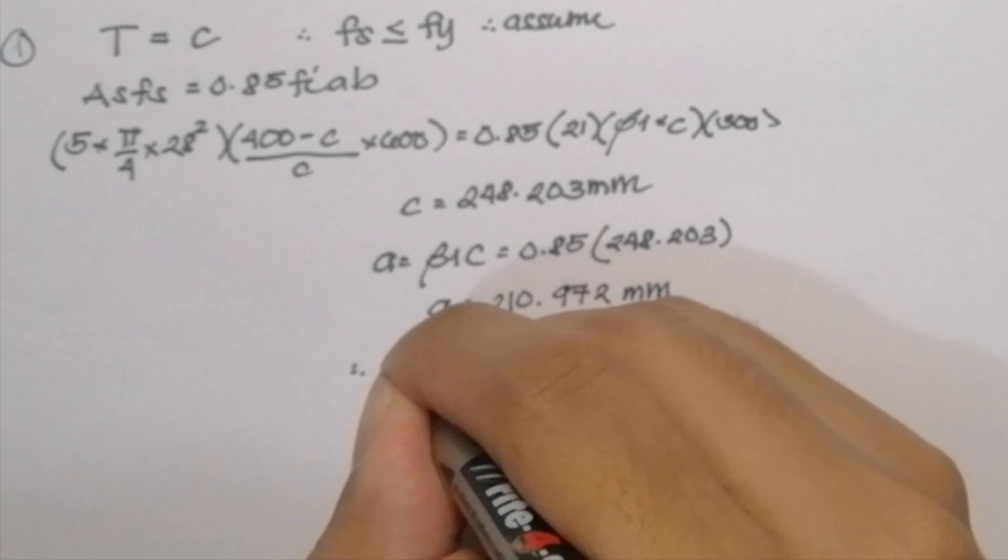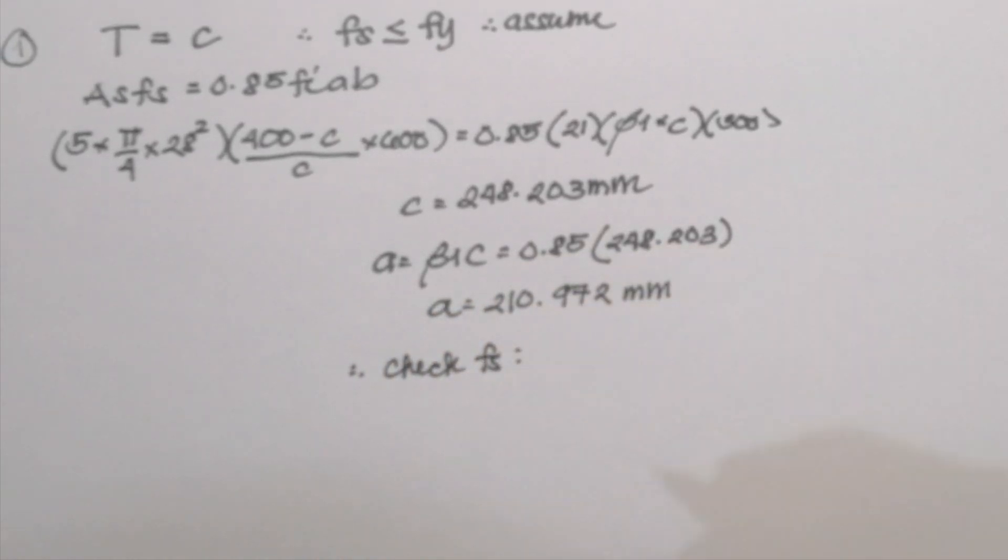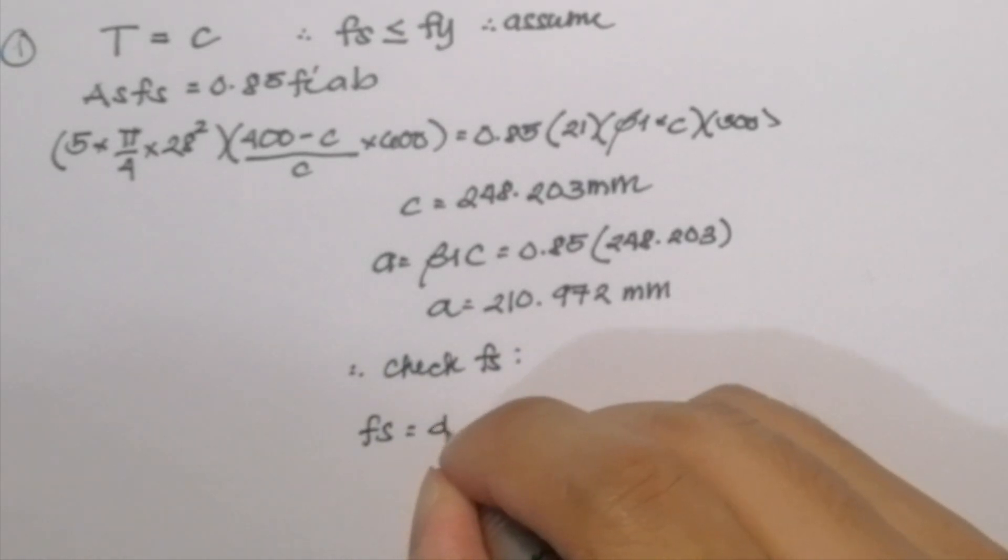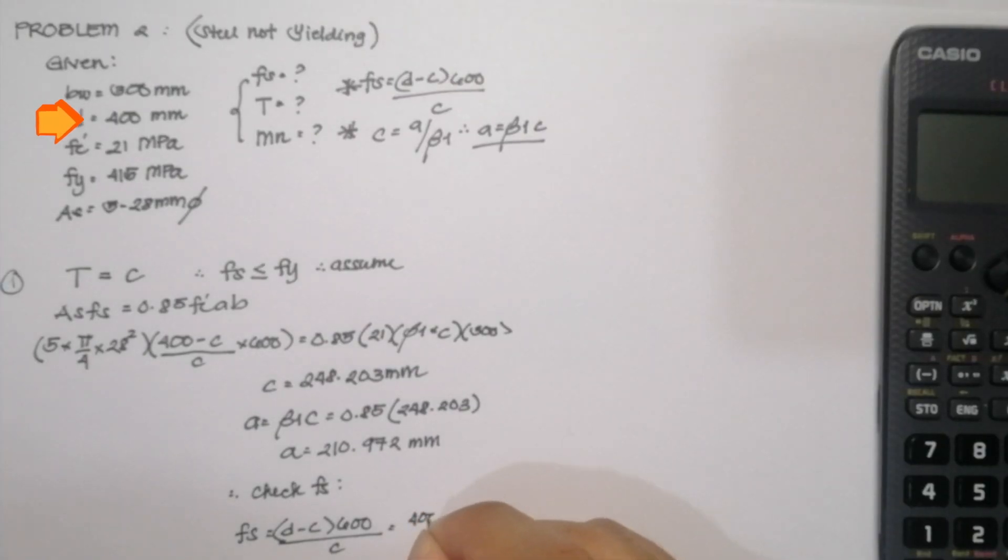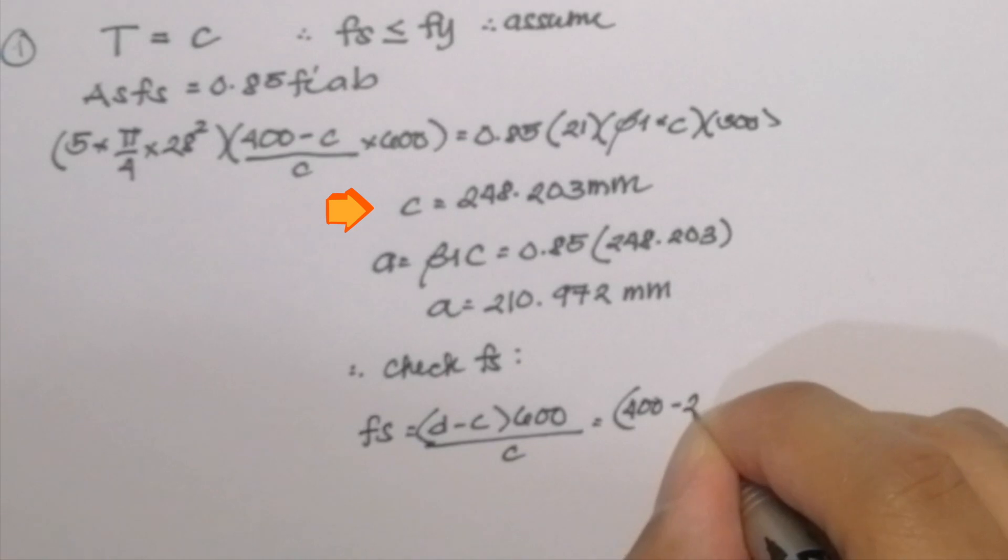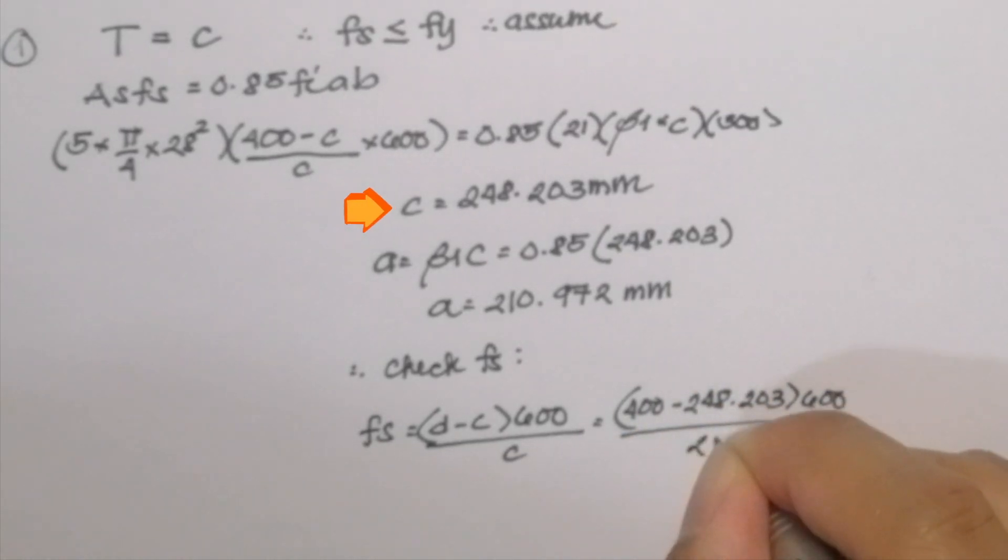So next step is we are going to check for the value of Fs if our assumption is correct. So the formula is (D minus C) multiplied by 600 all over C. Substituting our values, 400 minus 248.203 multiplied by 600 divided by 248.203.